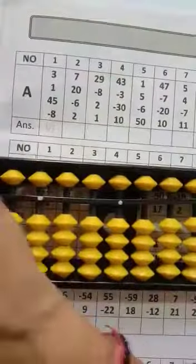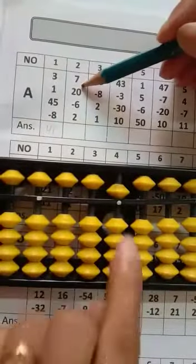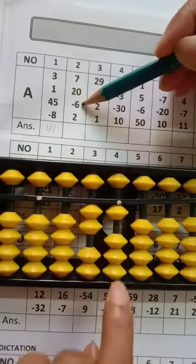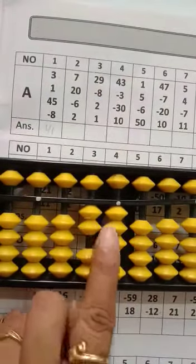Now question number 2. Start with 7, then 20. Minus 6, 5, 6. Add 2. Then your answer will be 23.